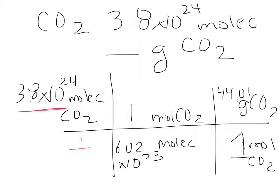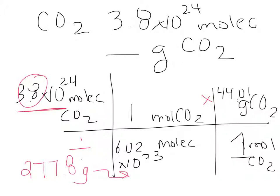So in my calculator, I take my 3.8, I divide it by my 6.02, and I multiply it times 44.01. And I get 277.8 grams. I start with 2 sig figs, so my answer has to have 2 sig figs — so 280 grams of CO₂ are in 3.8 times 10 to the 24th molecules.